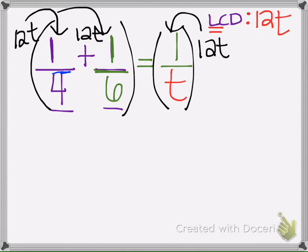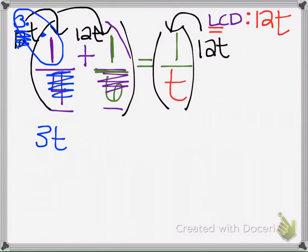So what happens is four goes into twelve three times. So what we're left with is three times t times one, which is three t. And then here, six goes into twelve twice, so we're left with two t and one, so two t.